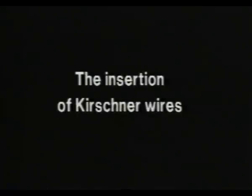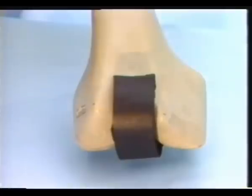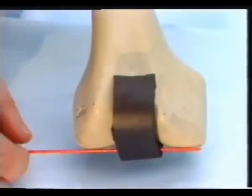The insertion of Kirchner wires. An articular fracture is reduced first. The position of Kirchner wires is normally secured by their purchase in the soft tissues, imitated by the foam rubber model.